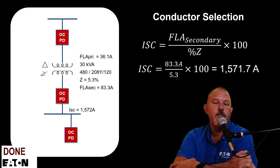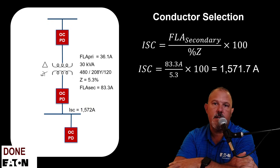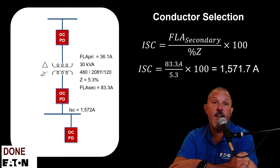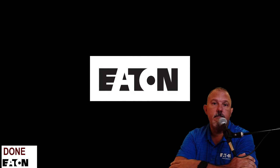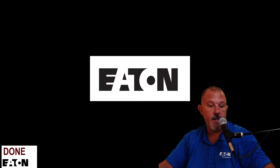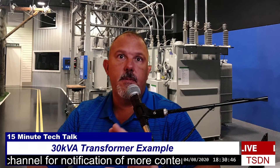The maximum fault current on the secondary is approximately 1,571–1,572 amps. Any standard overcurrent protective device selected for the secondary will have an adequate interrupting rating. With that, we've completed selecting primary and secondary OCPDs and conductors for the 30 KVA transformer — all within 15 minutes.